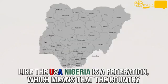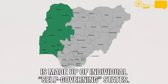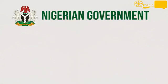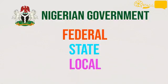Like the US, Nigeria is a federation, which means that the country is made up of individual, self-governing states. The country is separated into a hierarchy of government — the federal, the state, and the local.